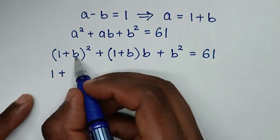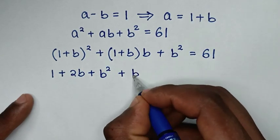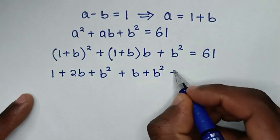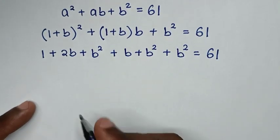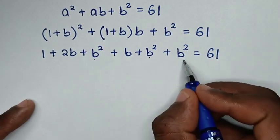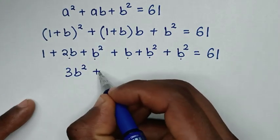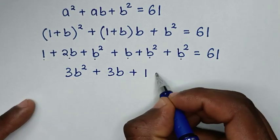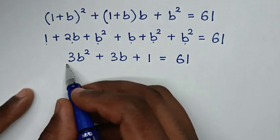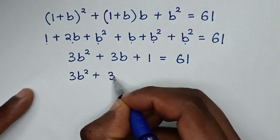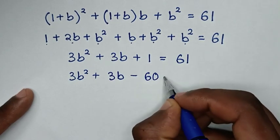Continuing the expansion: plus (1 plus b)b gives b plus b², and then plus b². Collecting like terms: b² plus b² plus b² is 3b², and 2b plus b is 3b, plus 1, equals 61. Taking 61 to the left side gives 3b² plus 3b plus 1 minus 61, so 3b² plus 3b minus 60 equals 0.